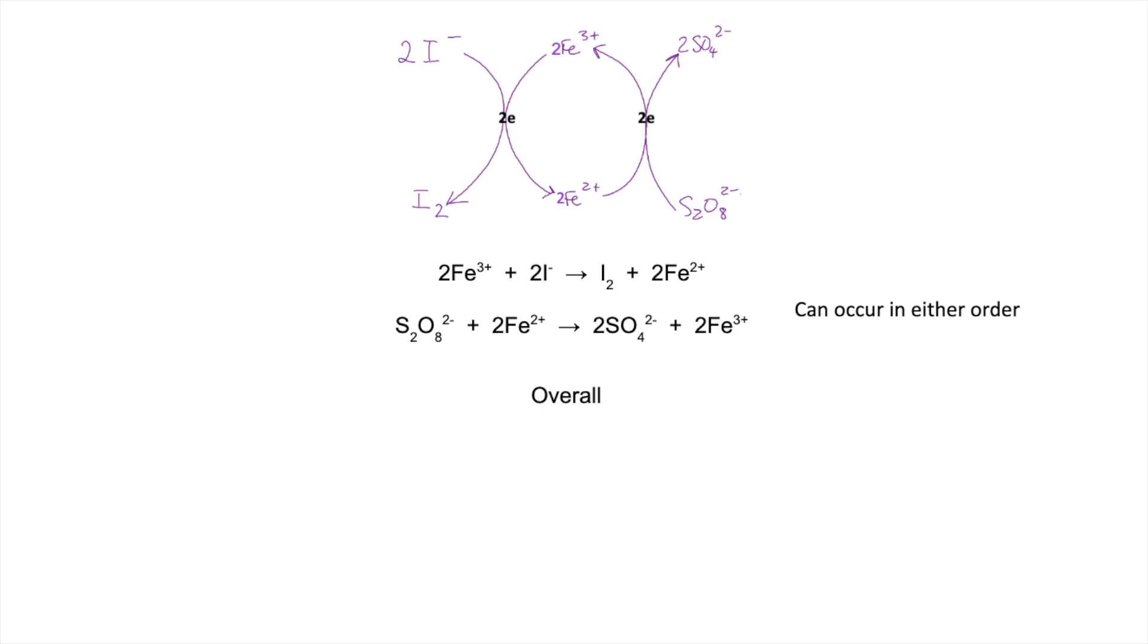So the overall equation is just the sum of those 2 steps. We get this long equation here. And then we're just going to cancel out like terms. All the Fe2+ and 3+ ions. You can see everything is being regenerated. Hence fitting in with the definition of a catalyst. So we simplify to the equation that we wanted. S2O82- plus 2 I- going to 2 sulfate ions and I2.